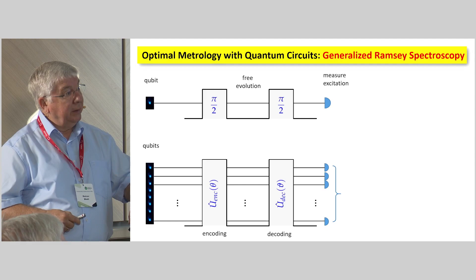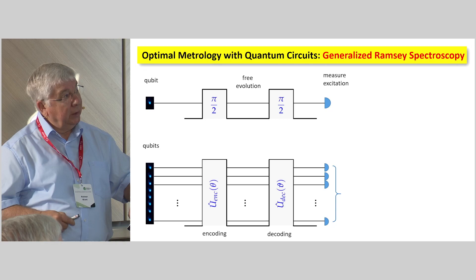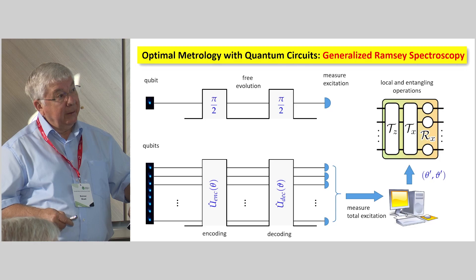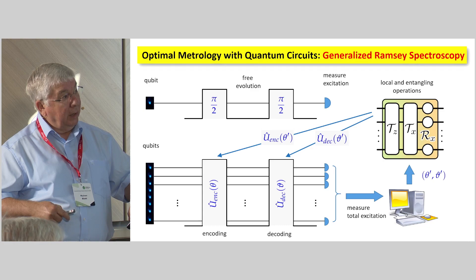And here the idea was, okay, we generalize this pi/2 pulse by just an encoding unitary, and the second one as a decoding unitary. Then we measure the total excitation. We define a cost function. So what is it what we want to optimize? Then we define, say, the operations that we need for this unitary right here. Let the system go. And then we let the system iterate until we find an optimum value.